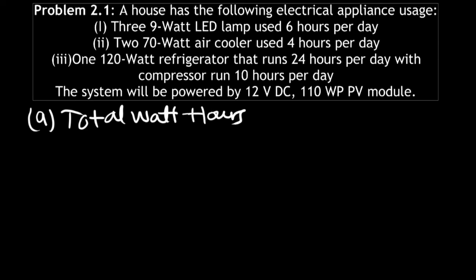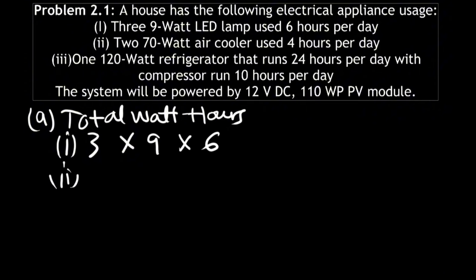Now how can you do that? We have three 9-watt LED lamps used for six hours per day, so you take three multiplied by nine multiplied by six. In the second part, you have two 70-watt air coolers used four hours per day, so take two times seventy multiplied by four hours.